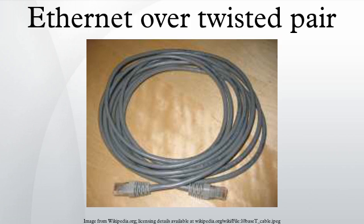StarLAN showed the potential of simple unshielded twisted pair by using Cat3 cable — the same simple cable used for telephone systems. This led to the development of 10BASE-T and its successors 100BASE-TX and 1000BASE-T, supporting speeds of 10, 100, and 1000 Mbit/s respectively.